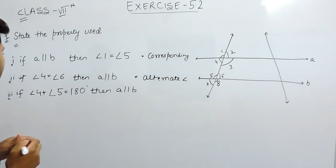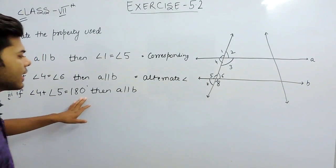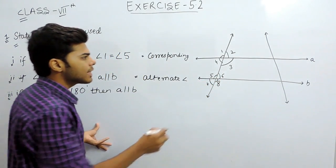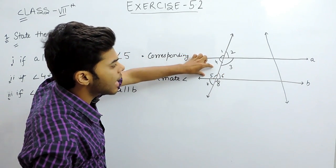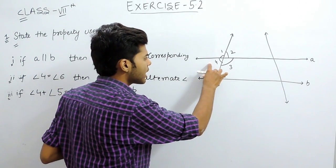And in the last part it says that angle 4 plus angle 5 equals 180 degrees. Then these two lines are parallel. Now you can see that this makes a complete box and inside this, angle 4 plus angle 5 makes 180 degrees. That means they are co-interior angles.